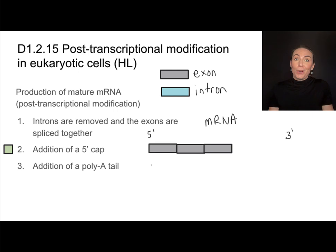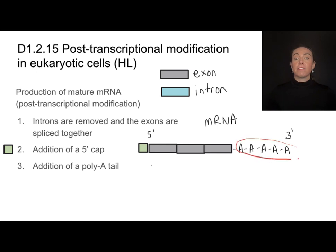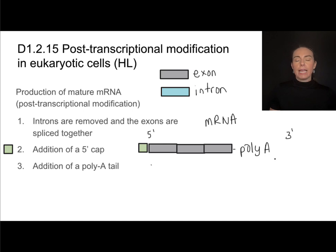The introns get cut out and have to stay in the nucleus. Once that splicing has taken place, we're also going to see the addition of a 5' cap. This is going to help protect the mRNA as it's moving through the nucleus, and a poly-A tail. It's a very long string of nucleotides that all have adenine as their nitrogenous base — poly meaning many, A meaning adenine. The poly-A tail goes on the 3' end of the mRNA molecule.